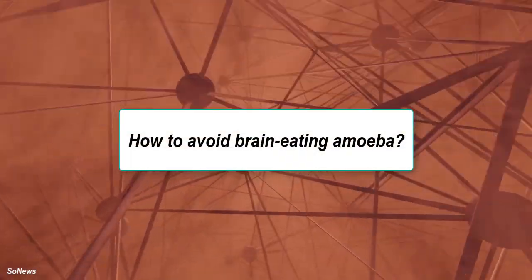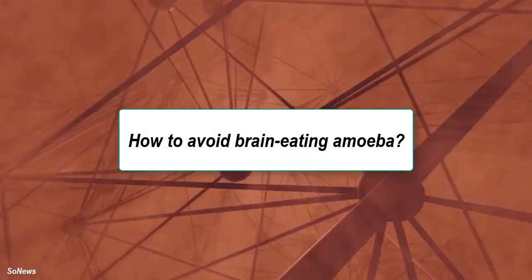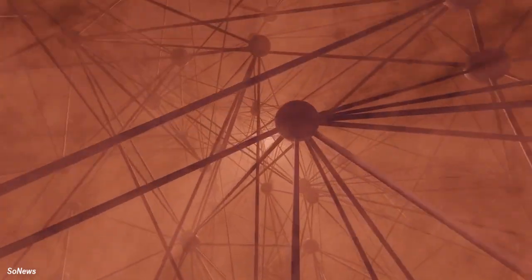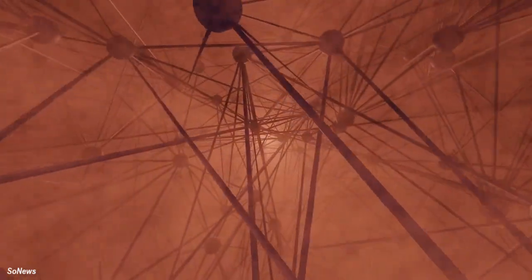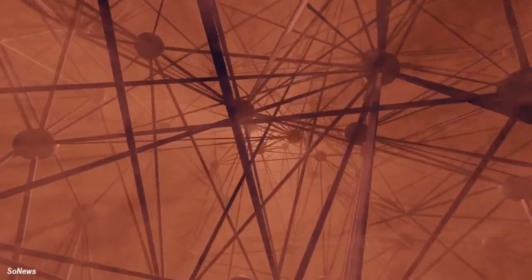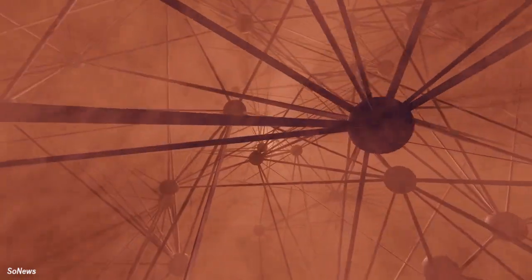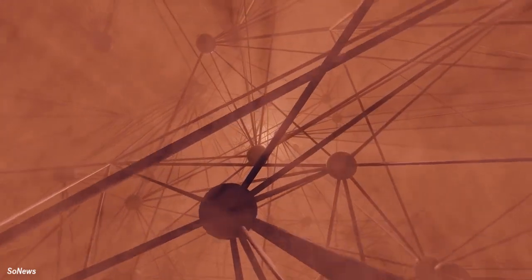How to avoid brain-eating amoeba? The brain-eating amoeba can be found in ponds, lakes, and rivers around the world. It can also be stored in the pipes through which tap water comes to our house. It is useful to take the following precautions to prevent amoeba.